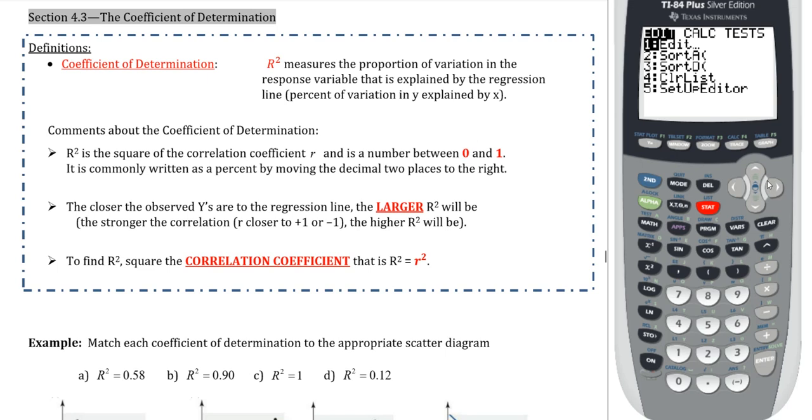The coefficient of determination, otherwise known as capital R², measures the proportion of variation in the response variable that is explained by the regression line. That is a very important understanding for R². It's the proportion of variation that is explained by the line. Specifically, we usually analyze it as a percentage. So the percentage of variation that is explained by the LSR line.